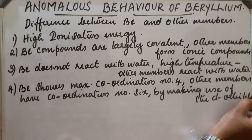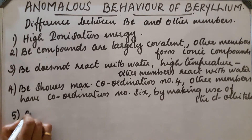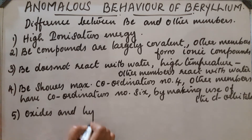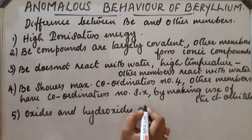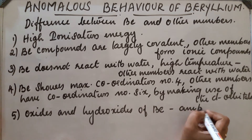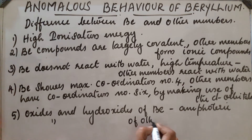Oxides and hydroxides of beryllium are amphoteric, whereas oxides and hydroxides of other members of Group 2 are basic.